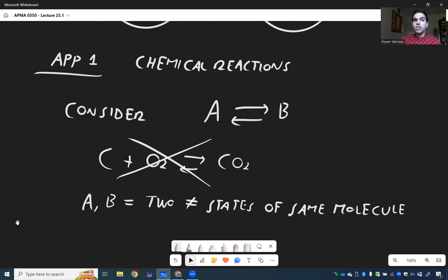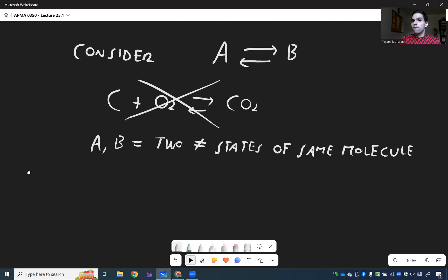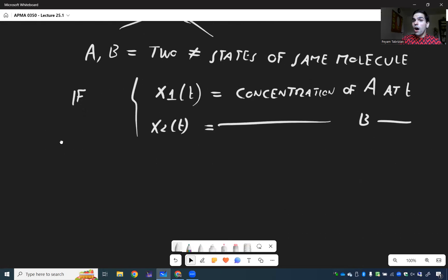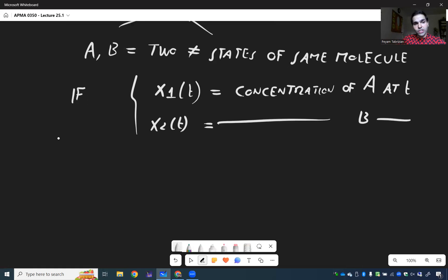Then, what you can do, you can measure the concentration of both A and B and that's what we call X1 and X2. So, if X1 of T is a concentration of A at time T and X2 of T is a concentration of B at T then the chemical reaction can be modeled by the following system of differential equation.